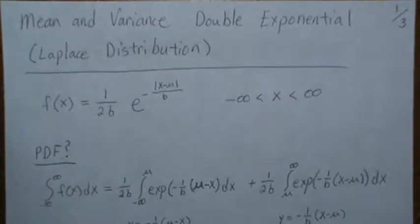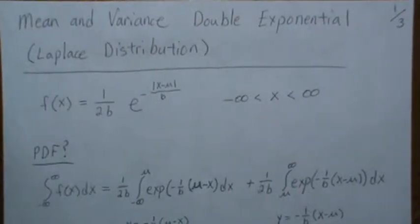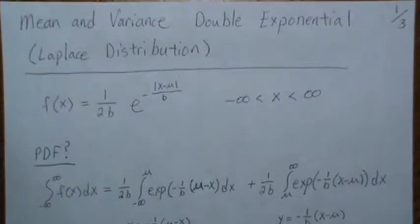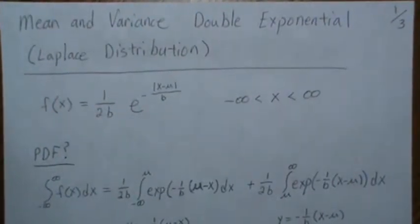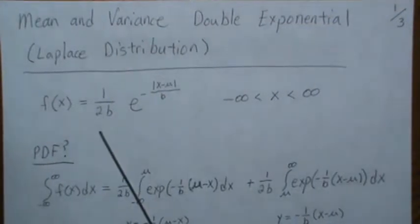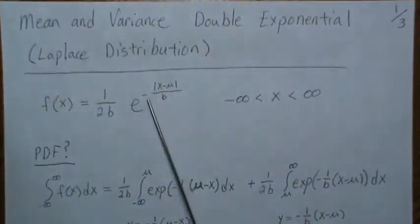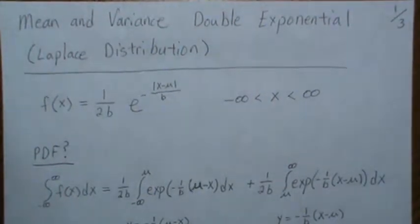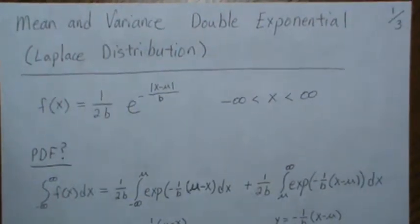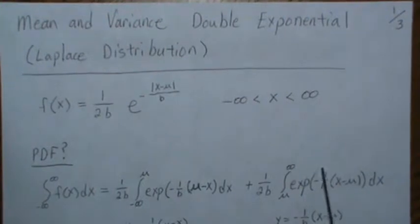Hello, in this video we're going to look at the mean and the variance of a double exponential distribution, sometimes called a Laplace distribution. The density looks like this, where we have in the exponent the absolute value of x minus mu, and x is the whole real number line.